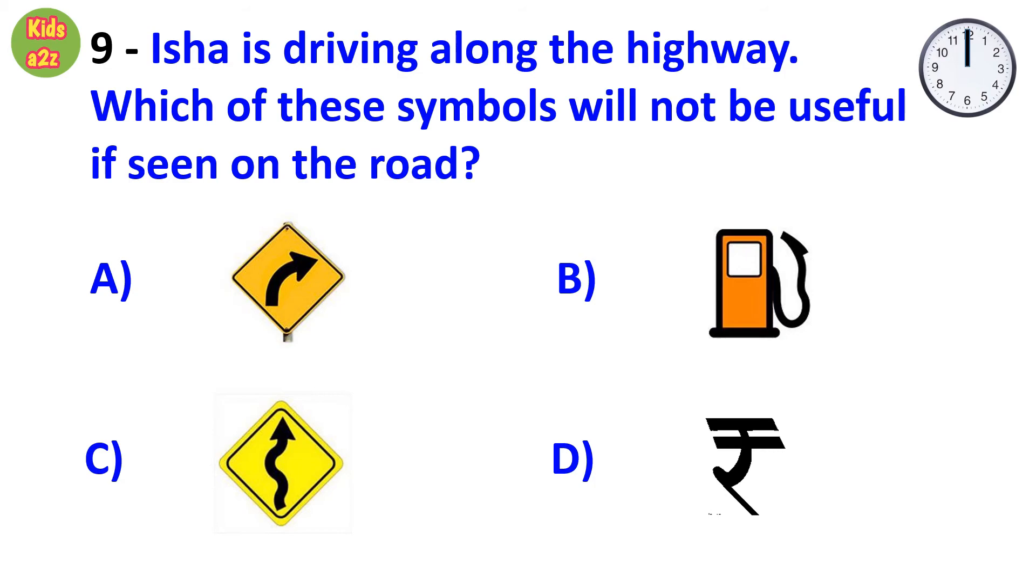Question number 9: Isha is driving along the highway. Which of the symbols will not be useful if seen on the road? Answer is option D.